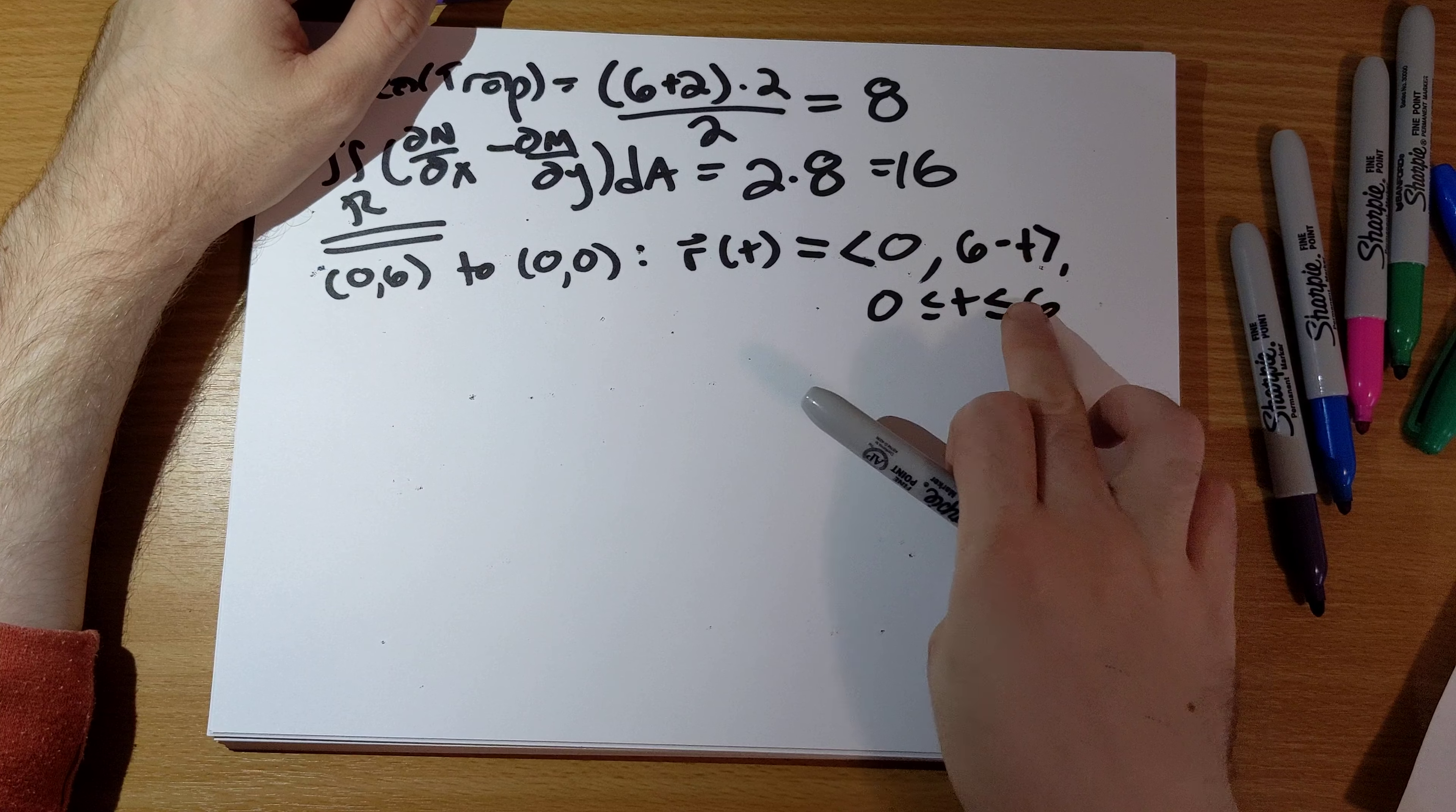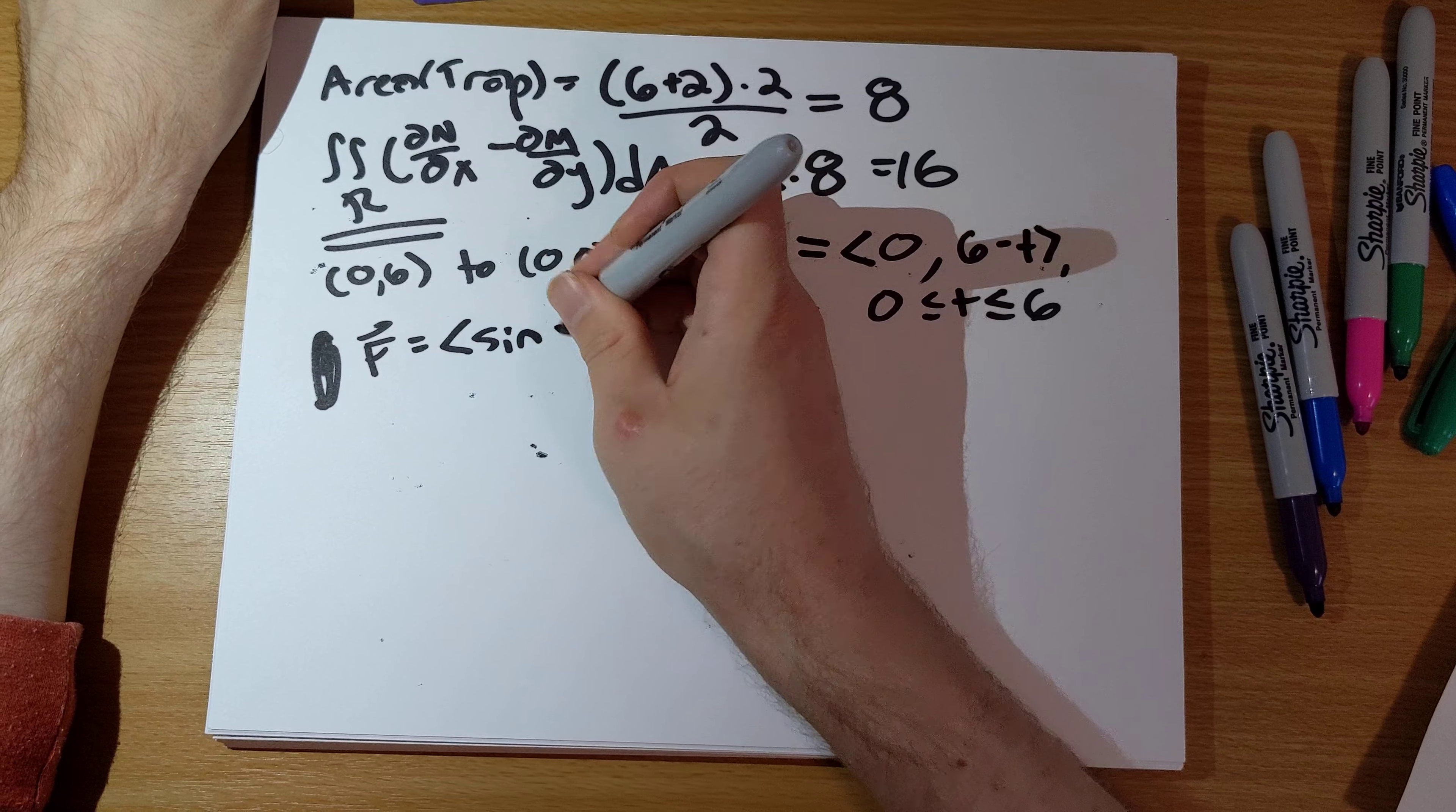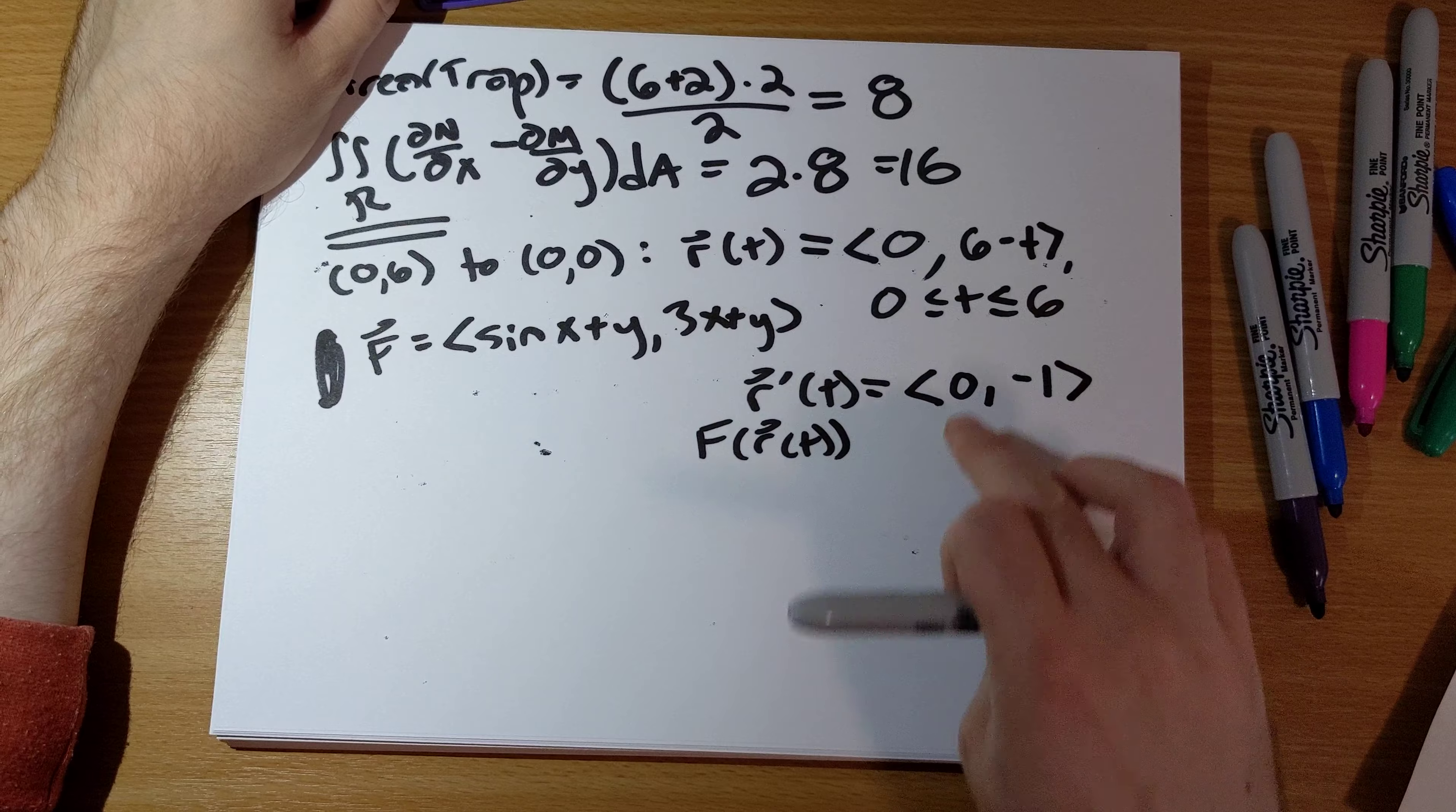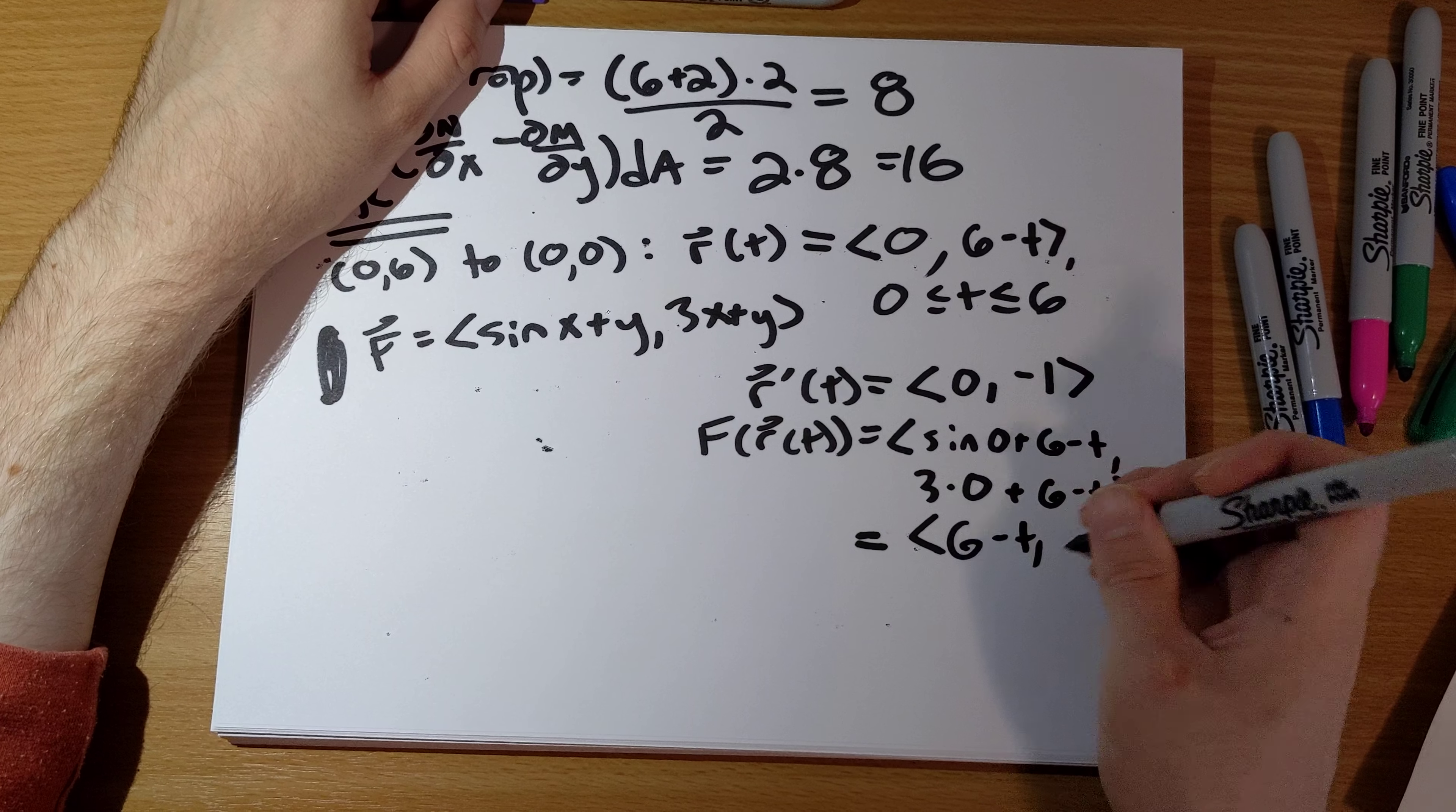When t is 0, we're at (0,6). When t is 6, we're at (0,0). That checks out. This is our r(t). Our f is sine(x+y), (3x+y). r'(t) is (0,-1). F of r(t): substitute in to get sine(0 + 6-t), which is just sine(6-t), and 3(0) + 6-t = 6-t.